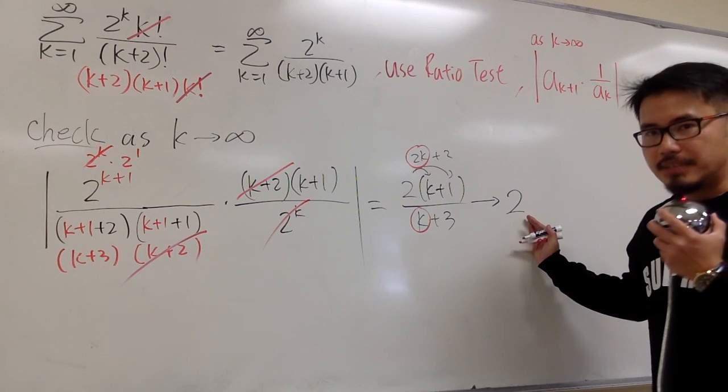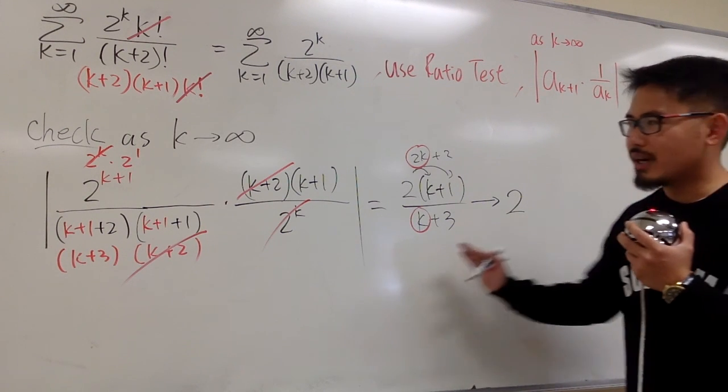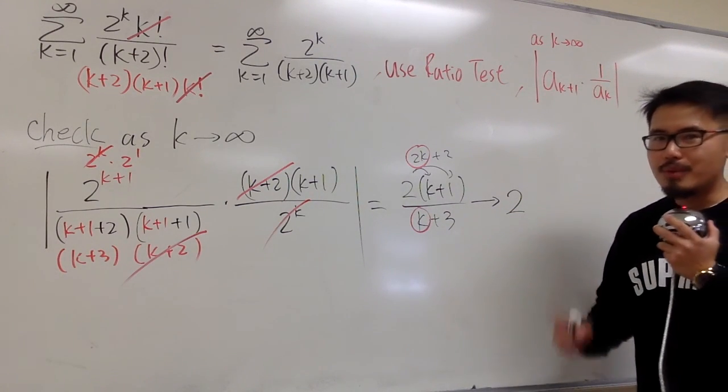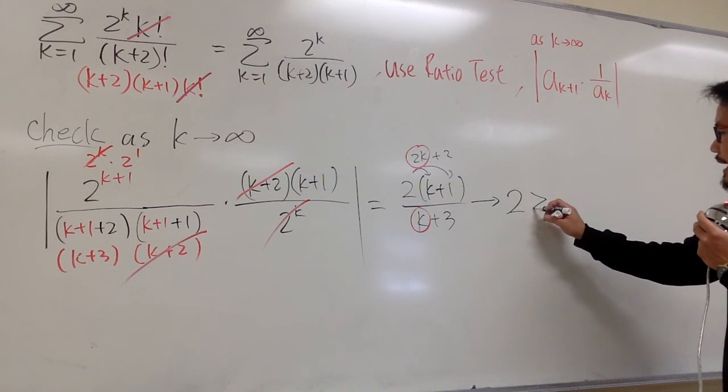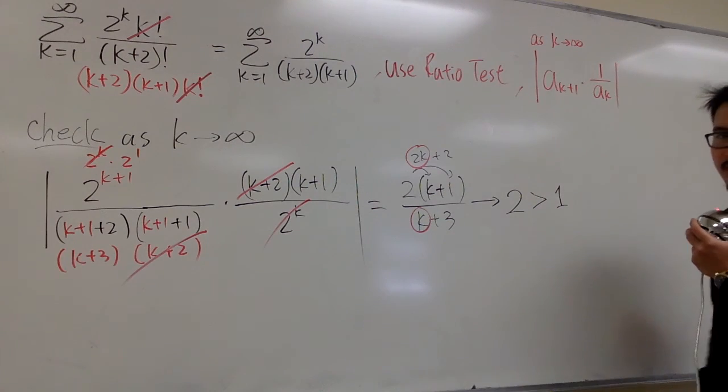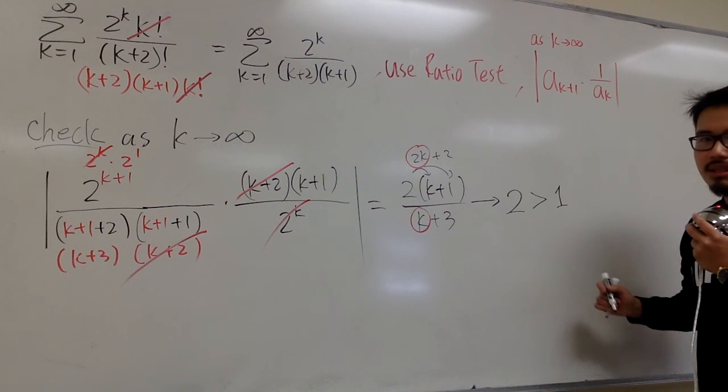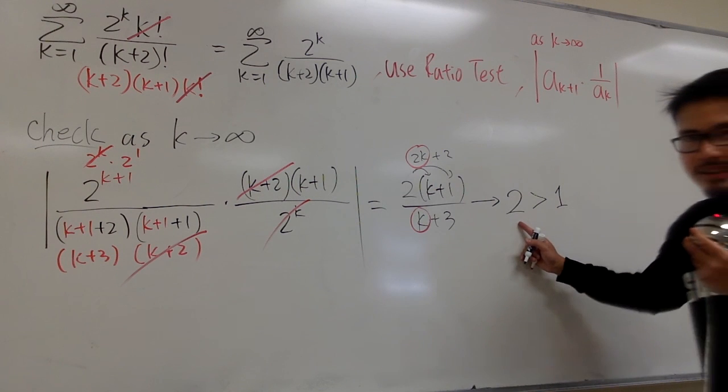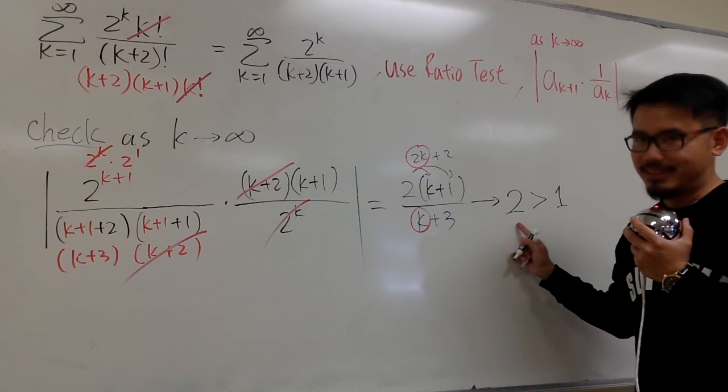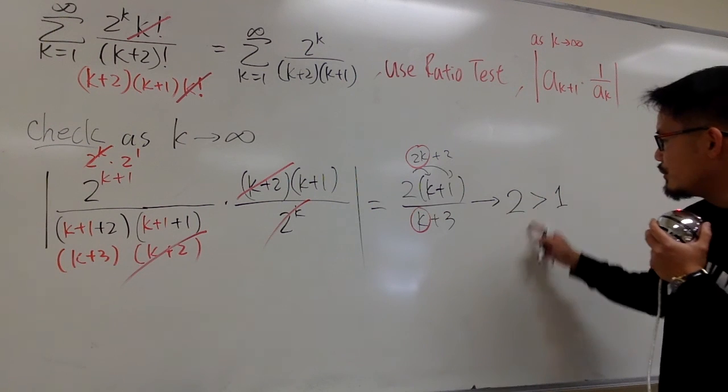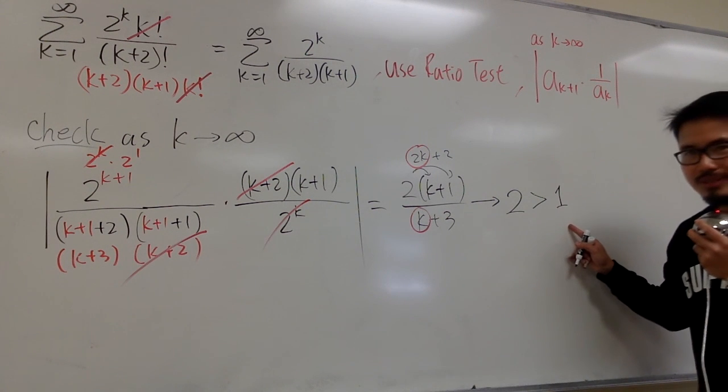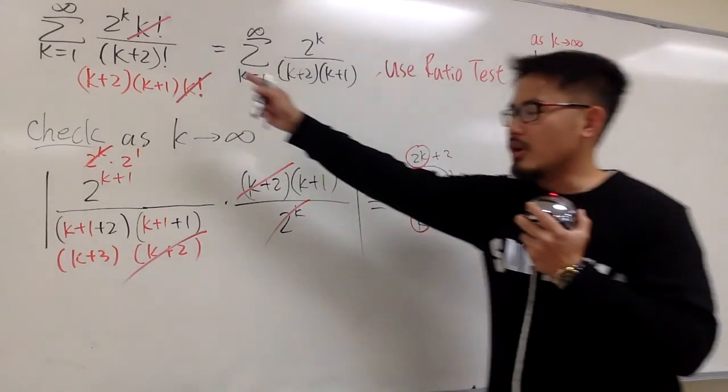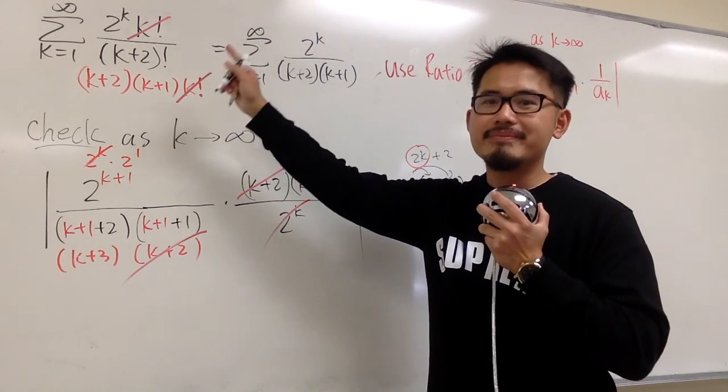All right, so this is the limit that we got after we worked out the ratio test. This is a 2. But now you have to tell me this 2 is bigger than 1, because we are using the ratio test. You have to look at what this limit is and tell me if it's bigger than 1 or less than 1. If this is equal to 1 that's not good, but since 2 is bigger than 1 it's good, because we can make a conclusion. The conclusion is that the original series diverges.